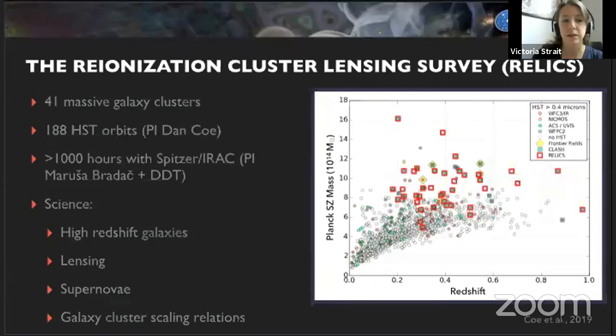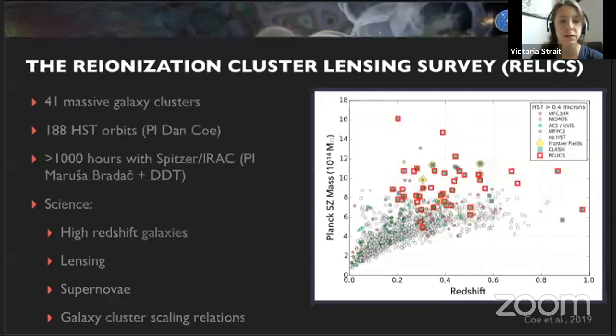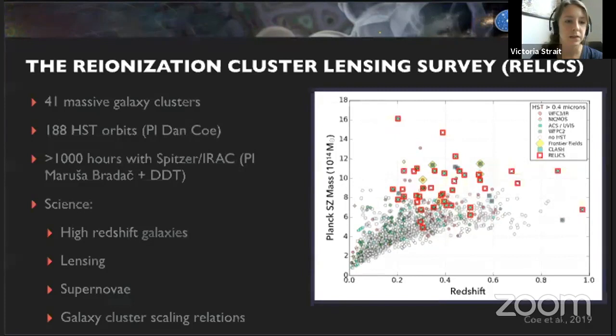There are several examples of lensing and blank field surveys that use different techniques. The one I'm working with is called the Reionization Cluster Lensing Survey, or RELICS. Unlike the Hubble Frontier Fields, which has taken really deep Hubble data of just a few fields, RELICS has taken a different approach — we've surveyed 41 massive galaxy clusters to find the brighter high-redshift candidates. We have a 188 HST orbit program PI'd by Dan Coe, along with over a thousand hours of Spitzer data PI'd by my advisor, Marisha Bradac. The clusters are all among the most high-mass ones.